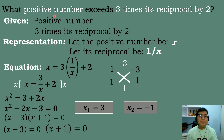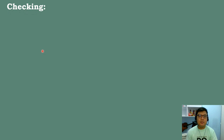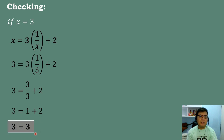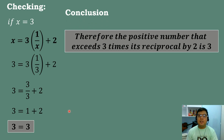Since we are looking for a positive number, negative 1 is not our answer. So x equals 3. Let's check: if x equals 3, then 1 over x equals 1 third. So 3 times 1 third plus 2 equals 1 plus 2, which equals 3. Both sides equal 3, so the answer is correct. Therefore, the positive number that exceeds 3 times its reciprocal by 2 is equal to 3.